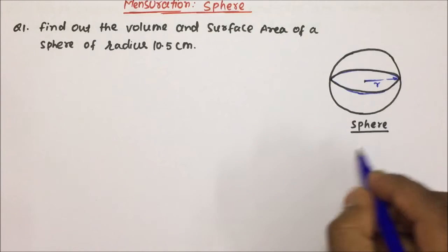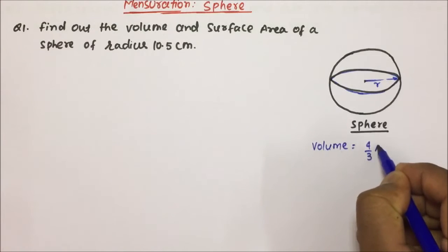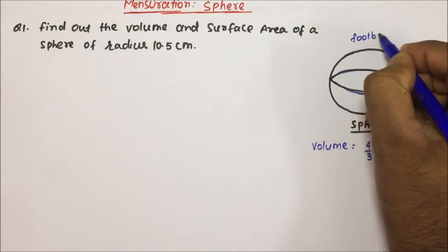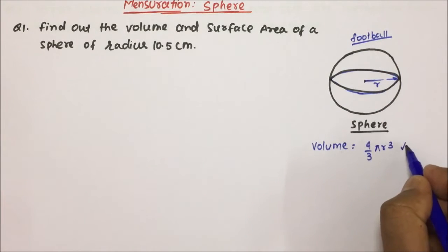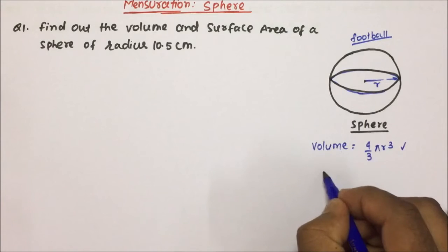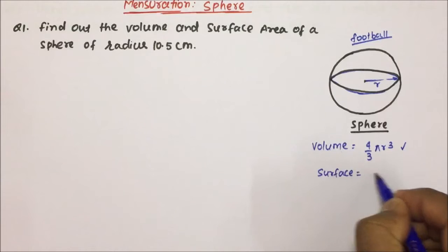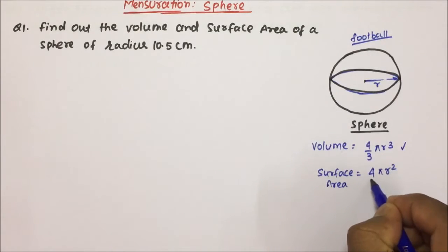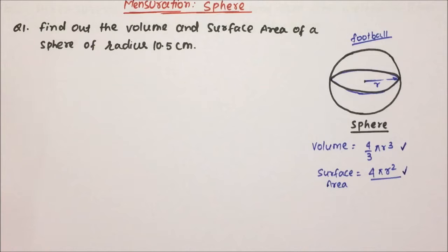Now friends, for a Sphere, the volume will be equal to 4 by 3 pi r cube. So friends, you might have seen a football — a football is a Sphere shape. Volume will be 4 by 3 pi r cube. And if we talk about surface area, there is only one surface area, which is the curved surface area. So surface area will be equal to 4 pi r square. There are only two formulas for Sphere and using these we will be able to solve the questions.